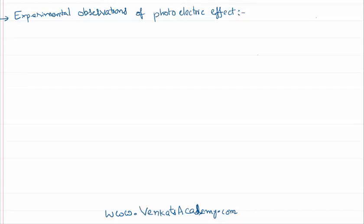Hello everyone, welcome to this video lesson. In this video lesson we are going to talk about the photoelectric effect and the basic observations made regarding it. When light of suitable frequency is allowed to strike a metal surface and there is emission of electrons from that metal surface, that phenomenon is called the photoelectric effect.